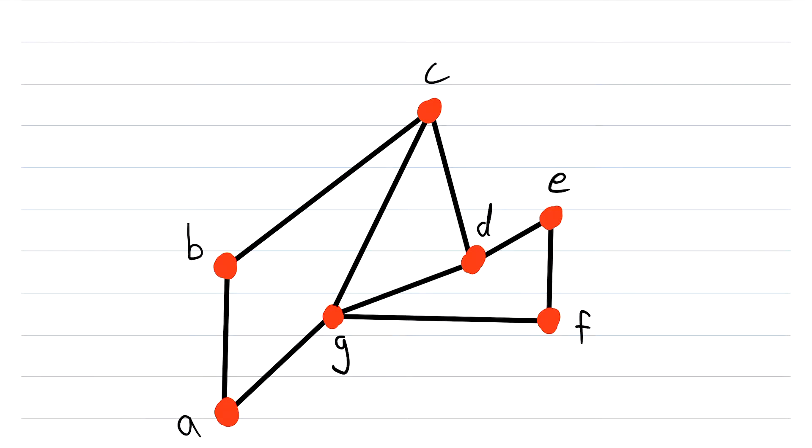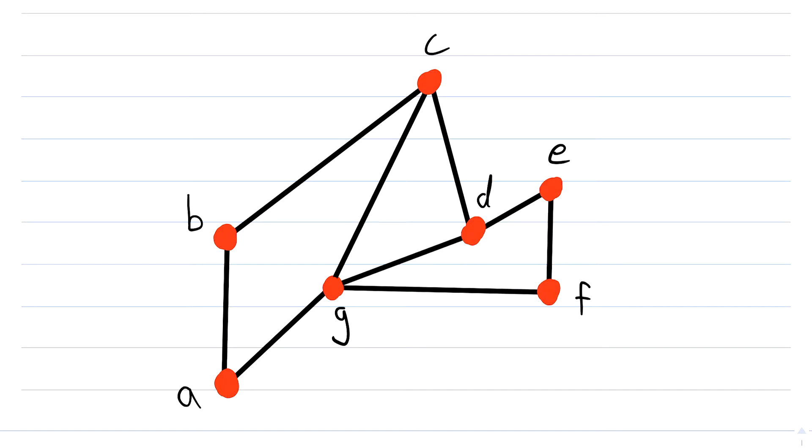This graph, as it so happens, is a connected graph. And what makes it connected is that every pair of vertices in this graph is connected. Recall that two vertices are connected, for example b and e, if and only if there exists a path that connects them.